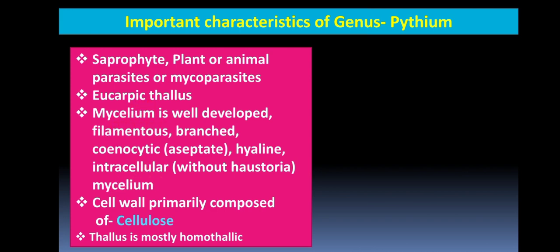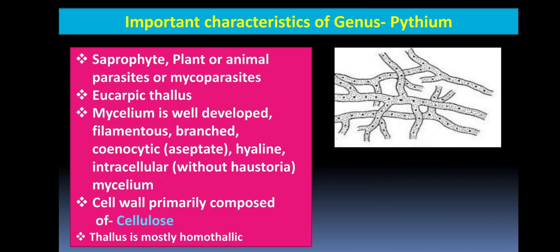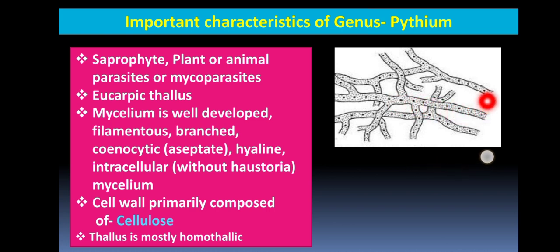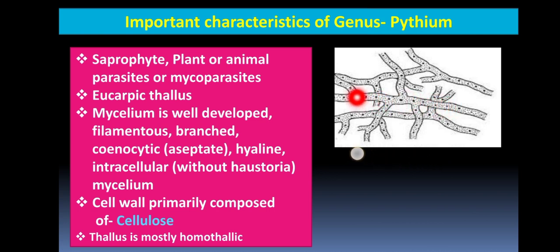The mycelium is very well developed, filamentous, and highly branched, as seen in the photo. It is aseptate in nature, meaning septa are absent — there are no cross walls. Because of this, the nuclear condition of the hyphae or mycelium is multi-nucleate, which is called the coenocytic condition.